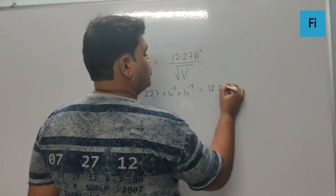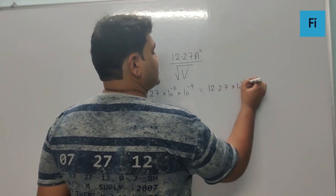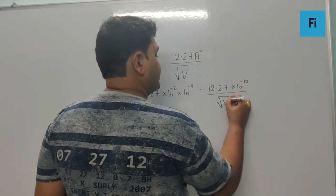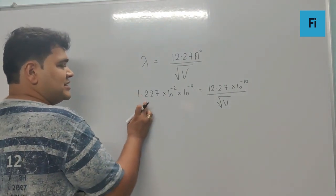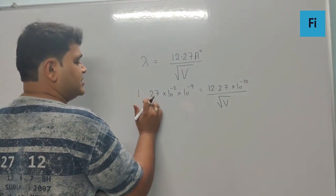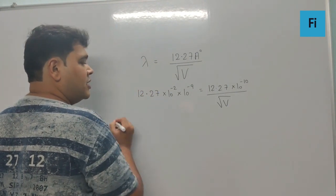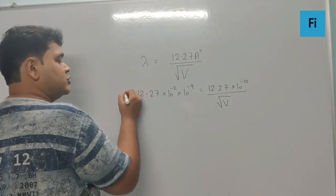This can be written as 12.27 into 10 raised to minus 10 upon root V. So now if I actually shift this decimal over here and make this as 12.27, I will also get 10 raised to minus 1 along with this.